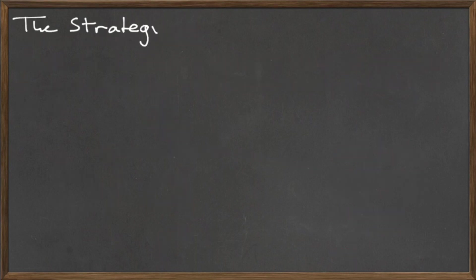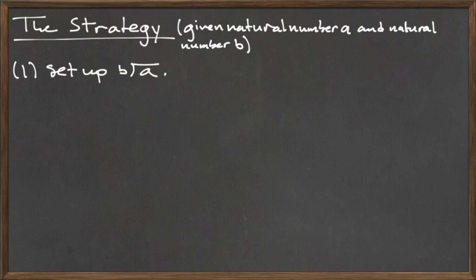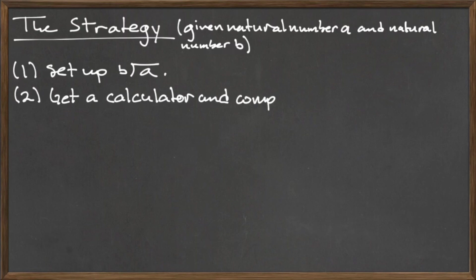Like with the division algorithm, there are two strategies for long division: one where the number being divided is positive, and one where the number being divided is negative. Here we'll discuss the strategy for dividing a positive number. The first step is to set up the long division notation shown in the previous slide.